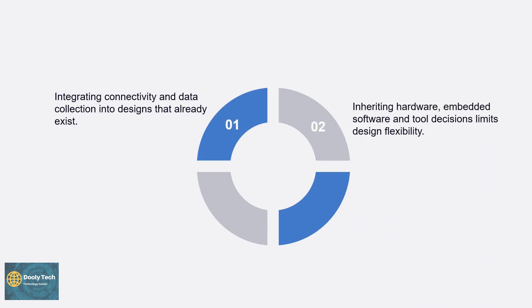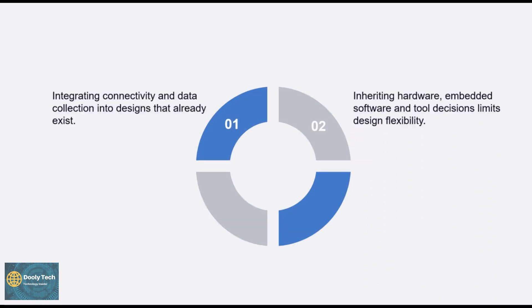The second challenge is inheriting the hardware, embedded software, and tool decisions that limits design flexibility. In industrial IoT you must deal with a lot of machinery and infrastructure that already exists — such as roads, bridges, buildings, factories, power plants, oil rigs — where replacements can cost millions of dollars. So established manufacturers are more inclined towards incremental development and the desire to change as little as possible.